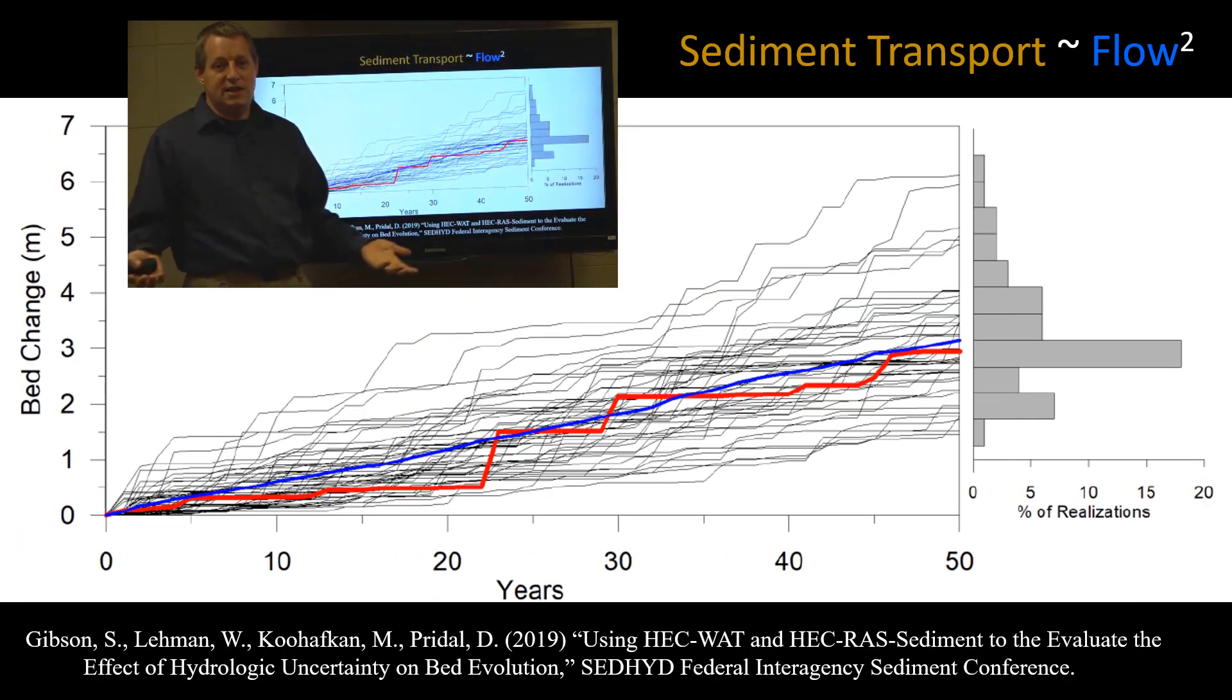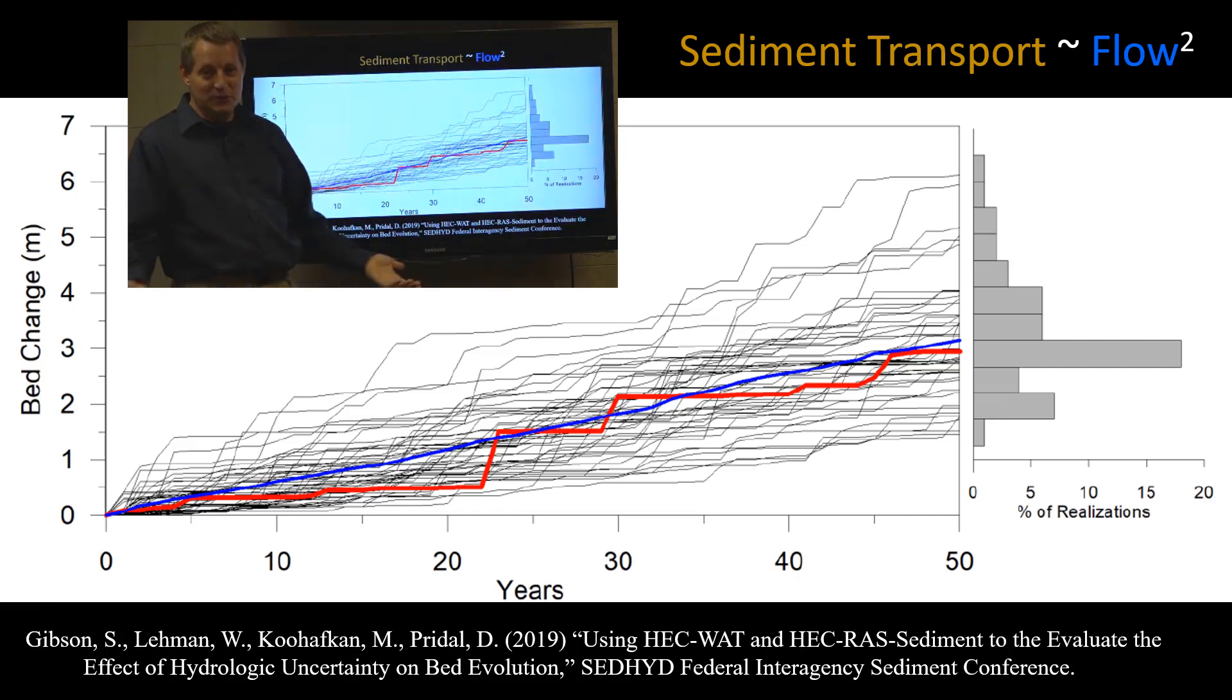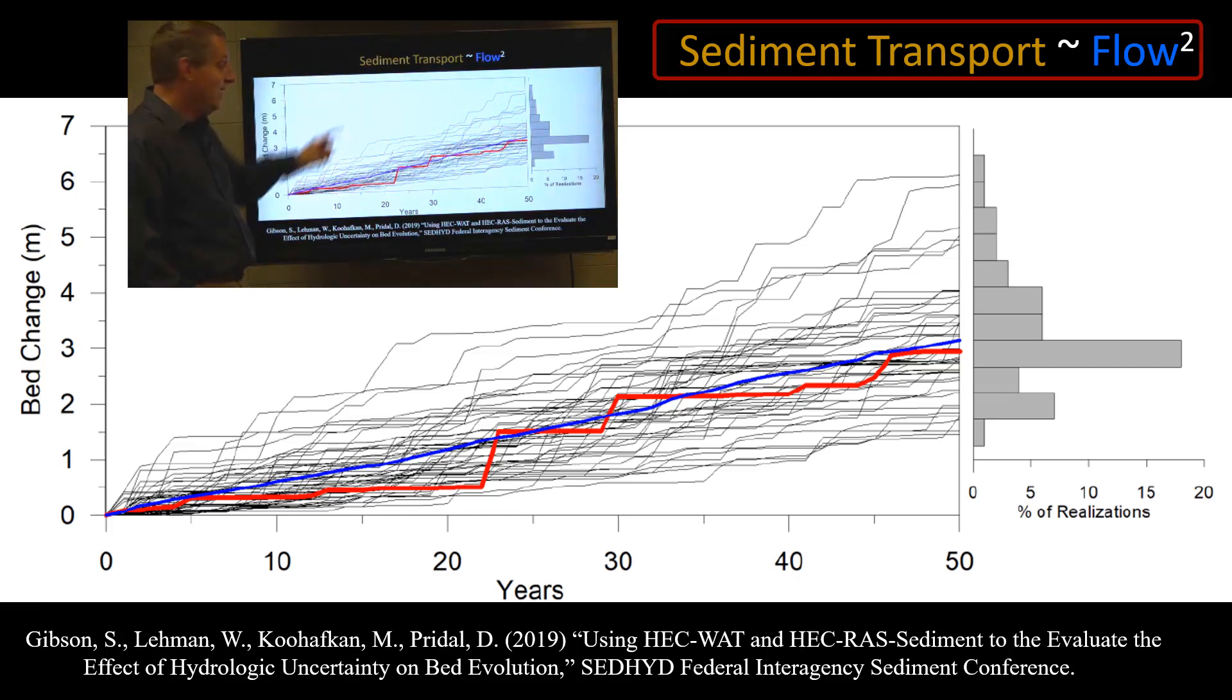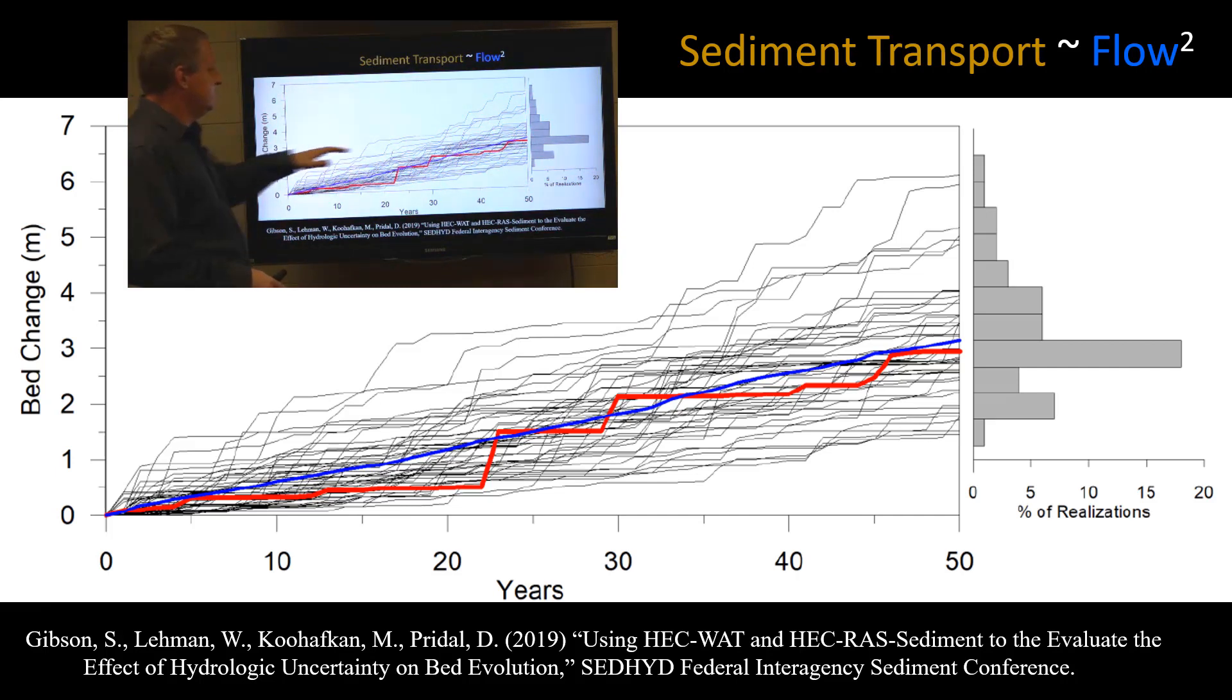And so here's the very simplest sediment transport model, kind of a heuristic that you could think about is that sediment transport is approximately proportional to the square of the flow. Is that true? Absolutely not. Is it true enough? Kind of, at least for this thought experiment that we want to do. And so what I've done here is I've just made the very simplest possible deposition sediment model in Excel using this equation. And what's going to happen is over the 50-year project life, we're going to deposit. And because sediment transport is non-linear, those episodes of deposition are really going to be driven by a few major events. And so here we've got kind of three or four major events and a few minor events that give us most of our deposition. And so we get an average bed change of about three.